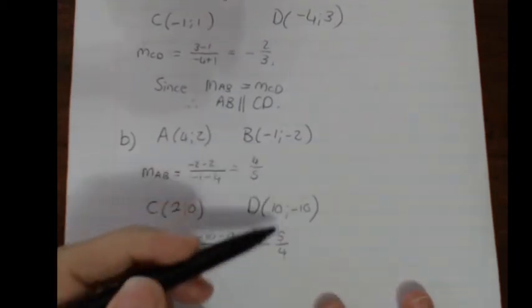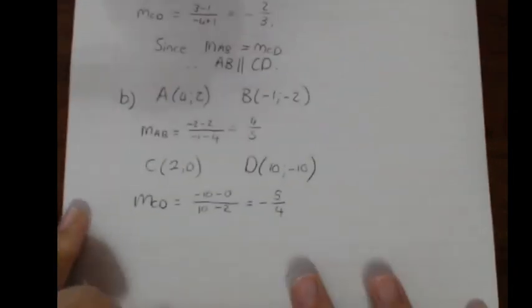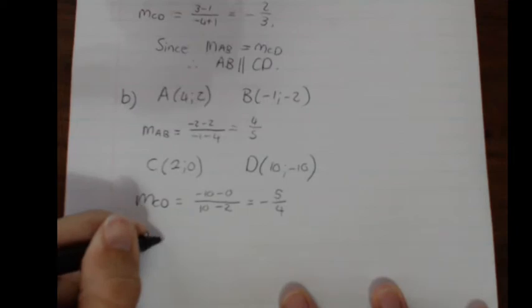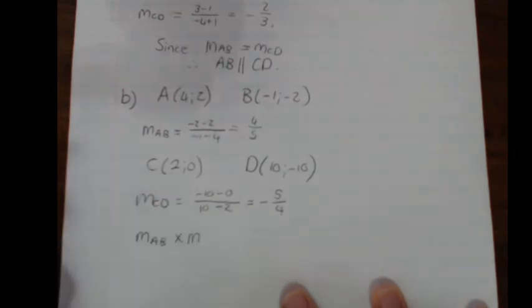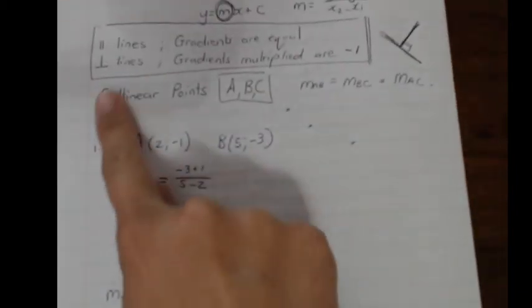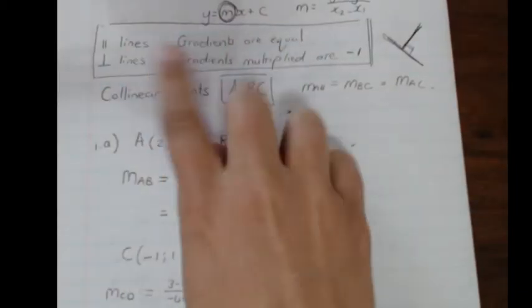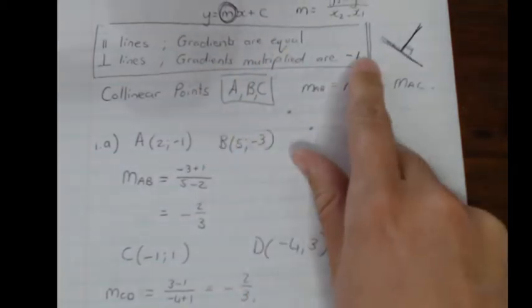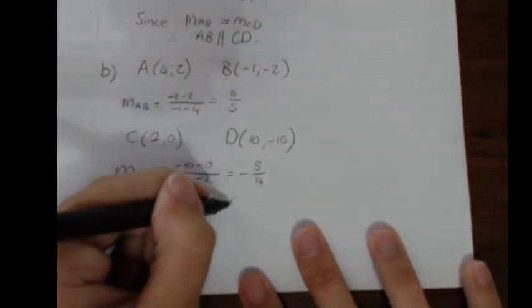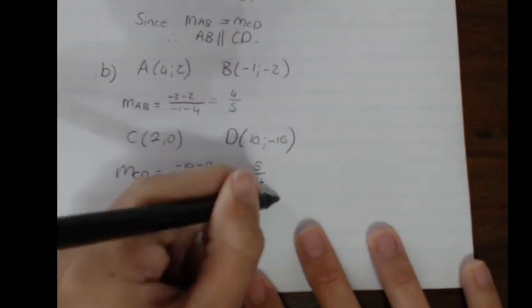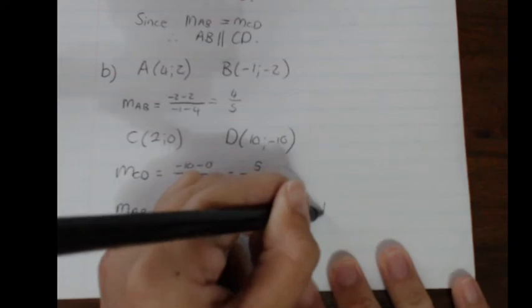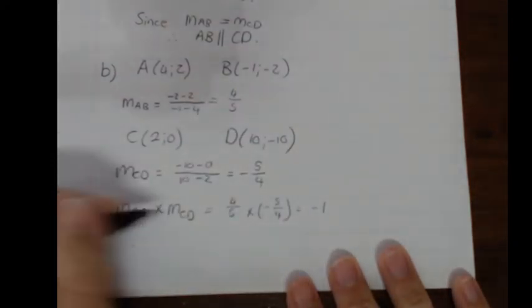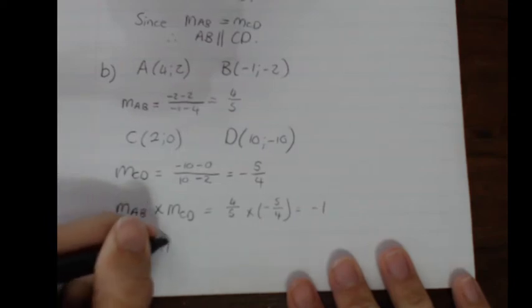The gradients are not equal, so these lines are not parallel. Next I check for perpendicular lines — I multiply the two gradients: four over five times negative five over four. That does give me negative one. Since the gradients multiplied equal negative one, AB is perpendicular to CD.